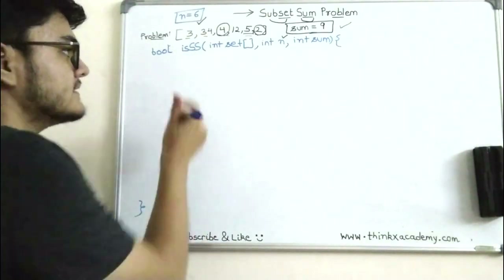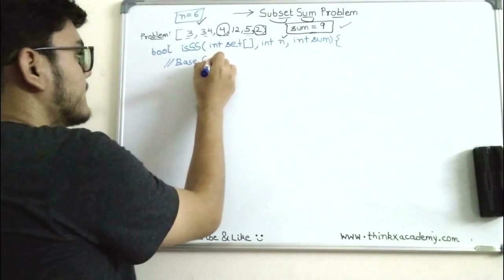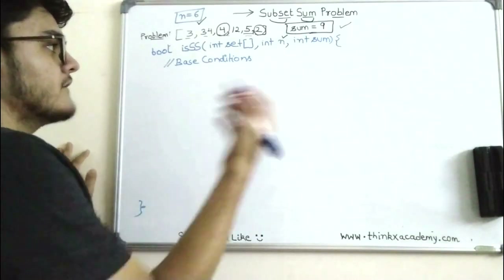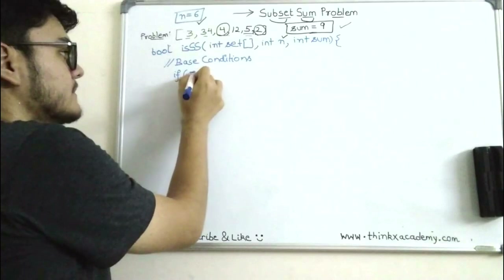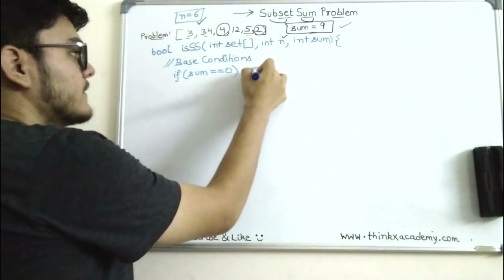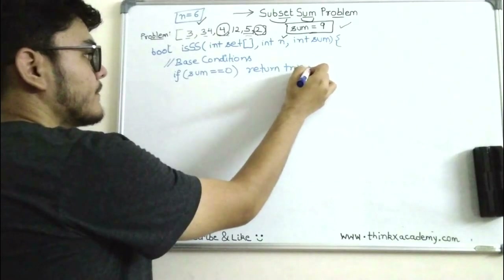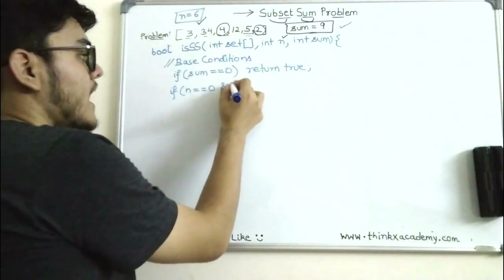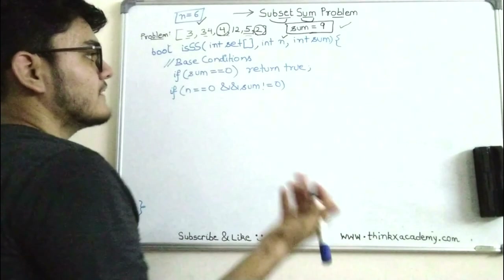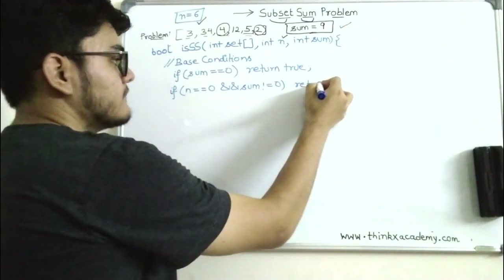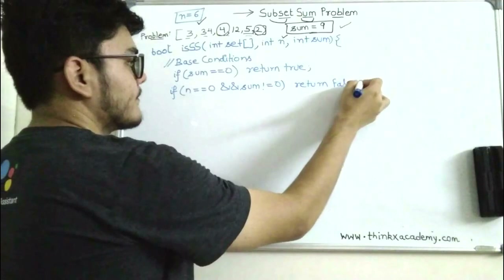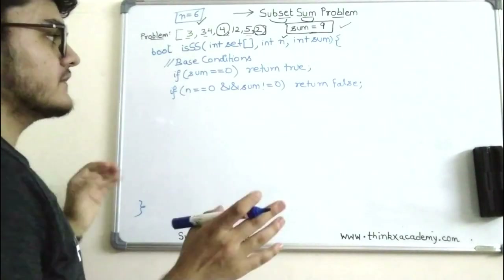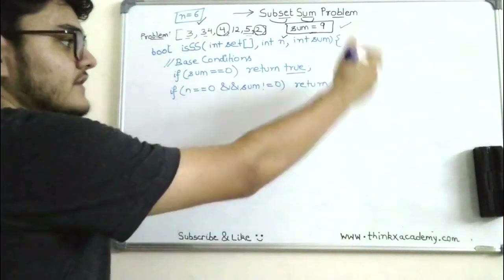Now we write the base conditions — conditions that stop the recursion. If the value of sum equals zero, we return true. If the value of n equals zero, that means we have picked up all the elements and the sum is not zero, meaning we have not found the required subset, so we return false.